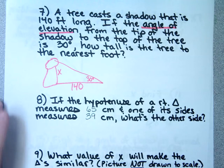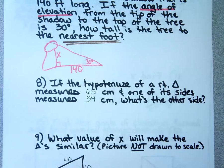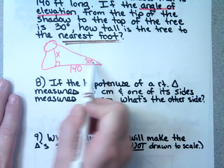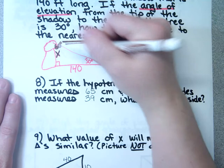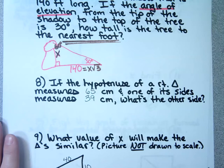Because it says nearest foot, I don't have to worry about rationalizing. Let's label: across from the 30, X; across from the 60, X√3. The side across from the 60 is 140 feet, so X√3 = 140. To solve for X, divide both sides by √3. The 940 — good. Put 140 divided by √3 in your calculator.